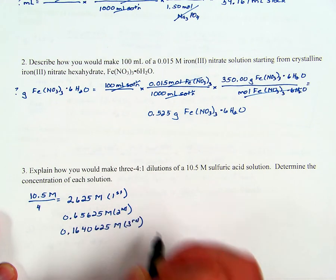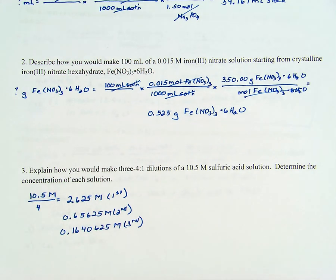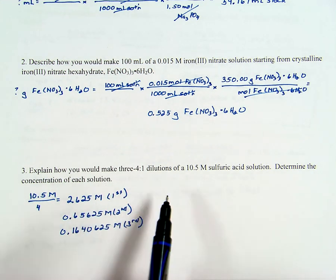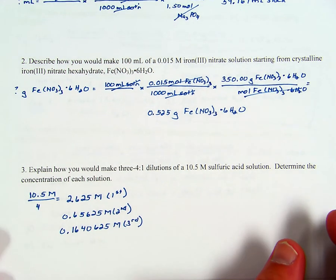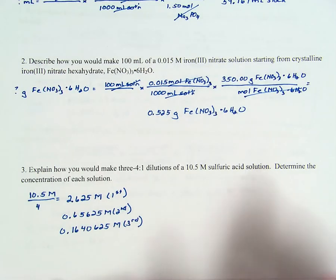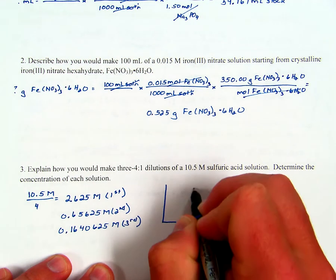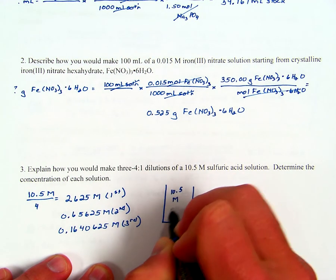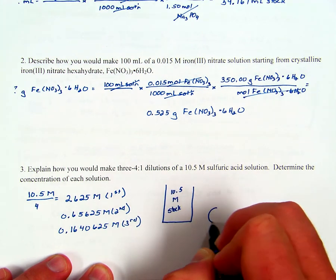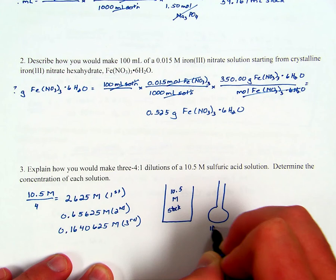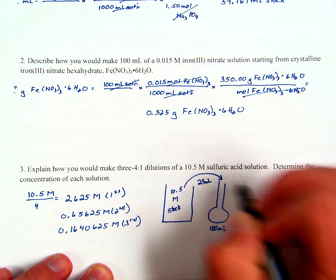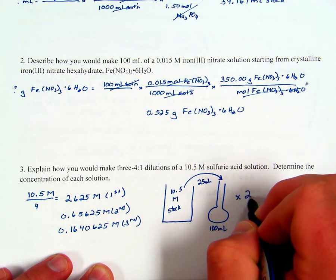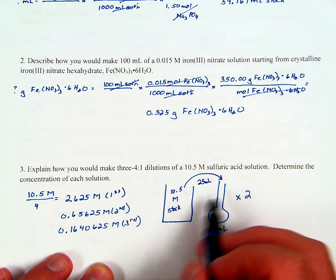As for how to make these dilutions, we're not told how much to make, so pick a volume — I'll pick 100 milliliters. Start with the 10.5 molar stock; take 25 milliliters (100 ÷ 4) and dilute to 100 milliliters in a 100 milliliter volumetric flask. Then take 25 milliliters from that solution, dilute to 100, and repeat once more for three total dilutions. Fill to the mark with water, cap, invert 12 times, and you're done. That's the end of the video.